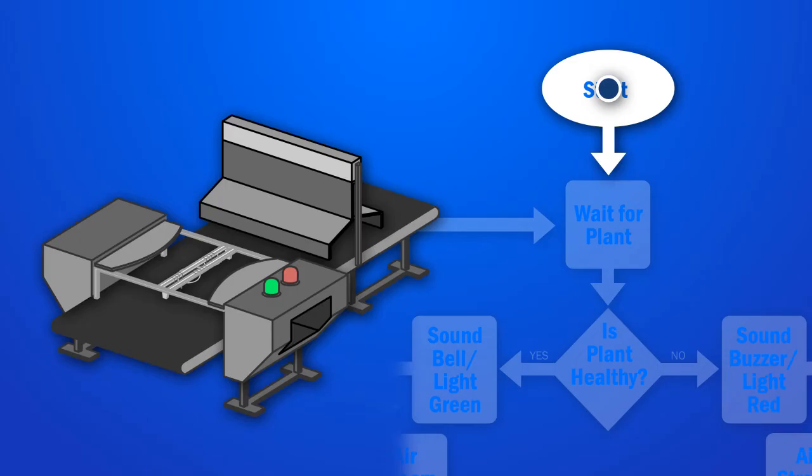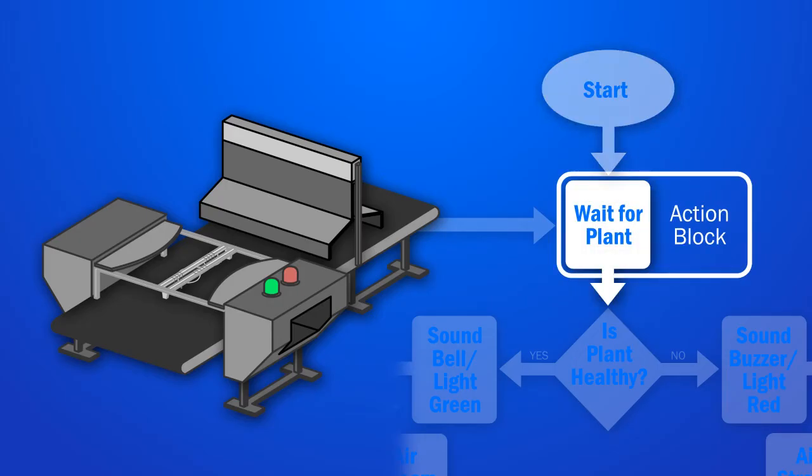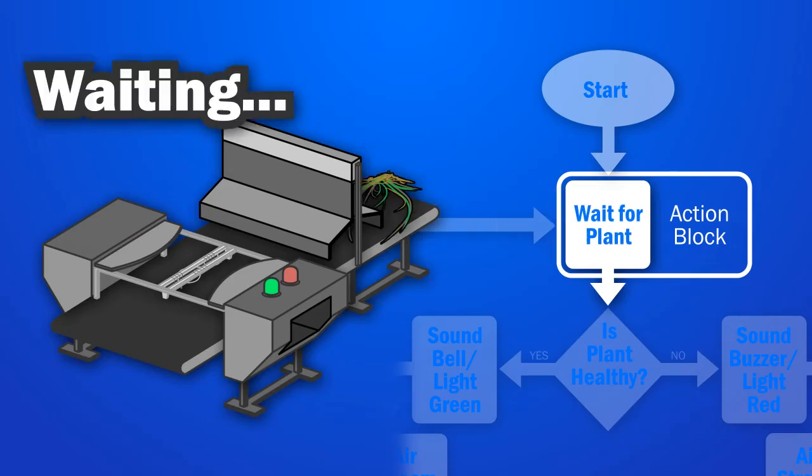Follow the arrow out of the start block. Action blocks contain a behavior the robot should carry out. The robot does what it says, then follows the arrow to the next block.